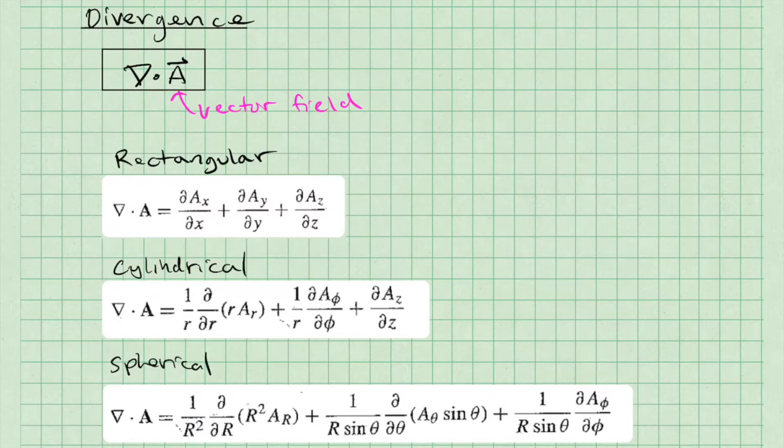The specific equation we will use to calculate the divergence depends on the coordinate system we are working with. You can see here the equations specified for three common coordinate systems: rectangular or Cartesian, cylindrical, and spherical.